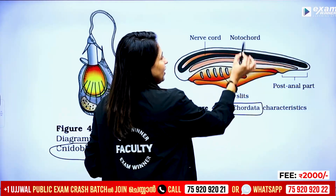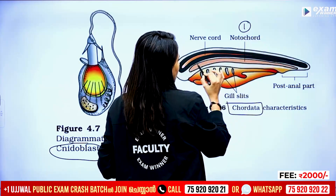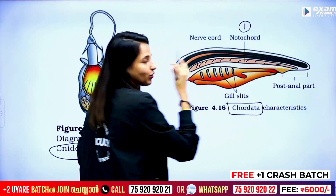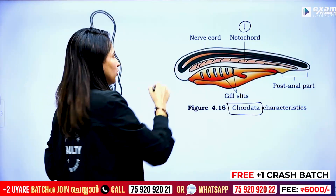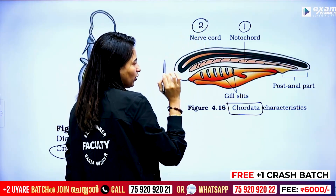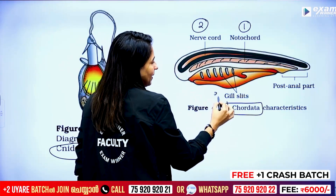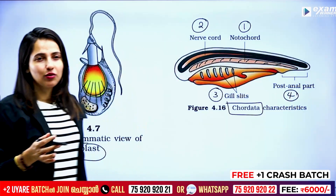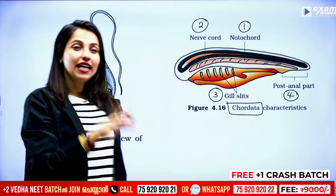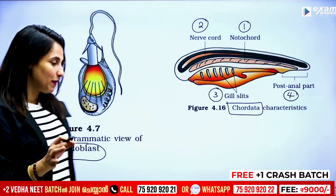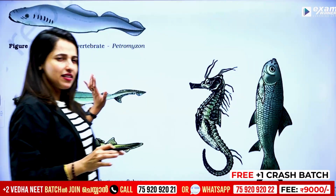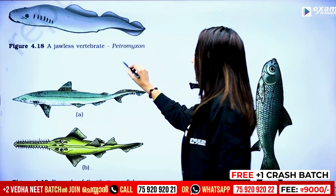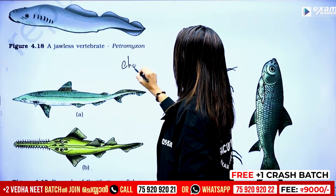You can learn the features. This is a notochord. This is a dorsal hollow nerve cord, paired pharyngeal gill slits, then a posterior tail part, and a ventral circulatory system. You can learn the features.